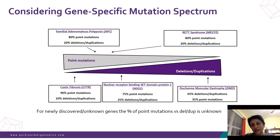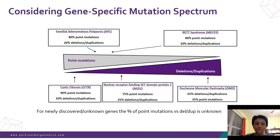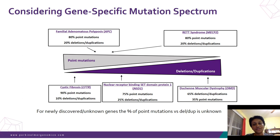When ordering testing, it's critical that the laboratory performs comprehensive testing. Today with next-generation sequencing it is possible to look at all variant types simultaneously, whereas ten years ago cascade or reflex testing was required. For this reason, the method described on a genetic report is important for the physician to review — especially when the report is negative.